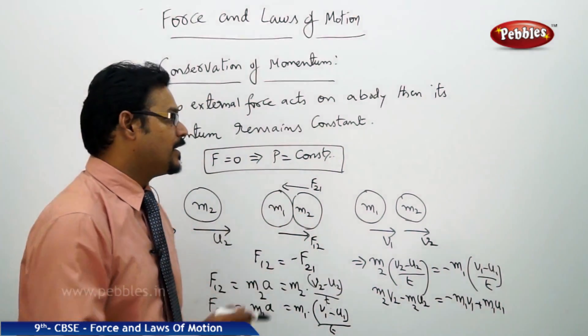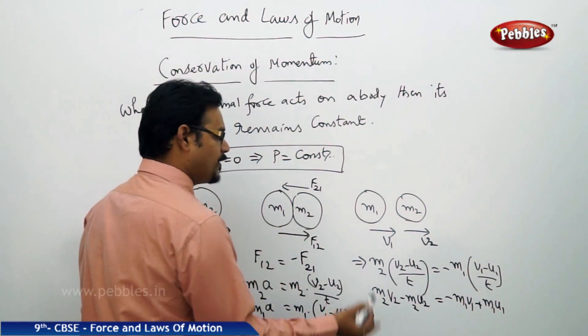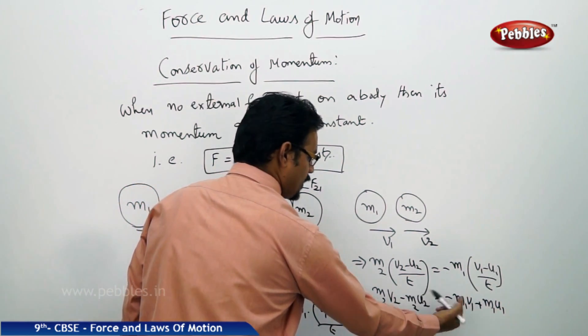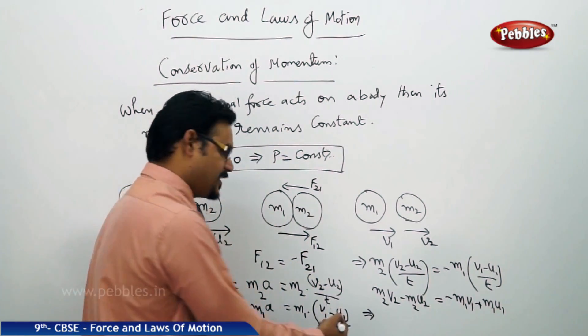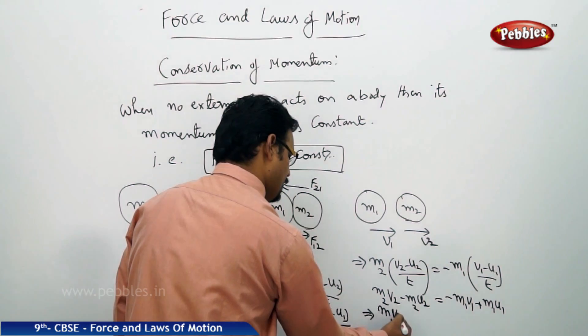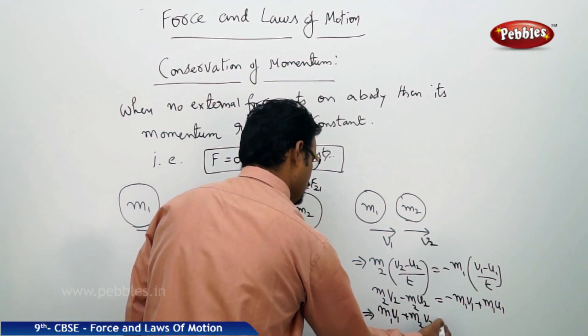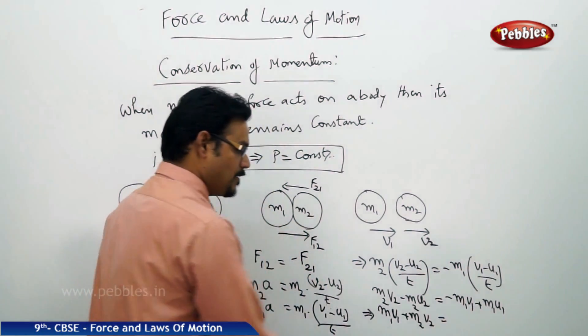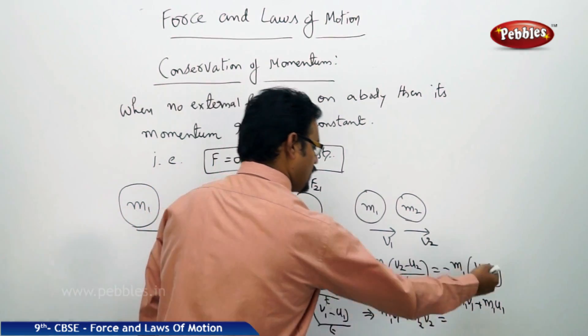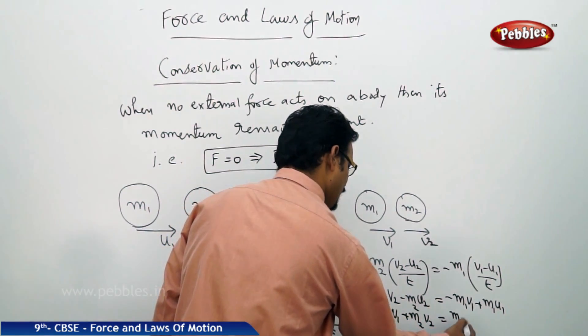We got an expression. Now what I do, see what I am doing: minus m1 u1 bringing to left hand side, so m1 v1 plus m2 v2 equals to minus m2 u2 brings to right hand side. So then you get m1 u1 plus m2 u2.